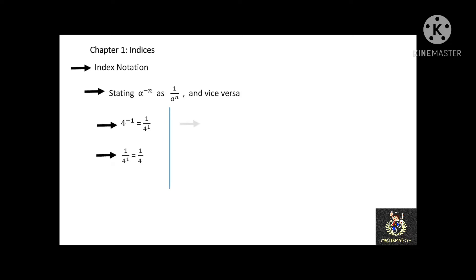Let's see another example. 4 to the power of negative 2 can be stated as 1 over 4 to the power of 2. The value of 4 to the power of negative 2 is equal to 1 over 16, because 4 to the power of 2 is equal to 4 times 4, which is 16.